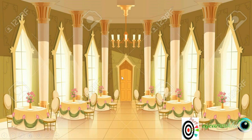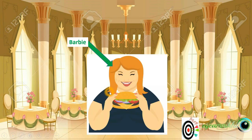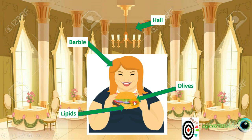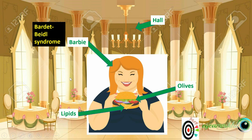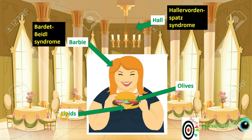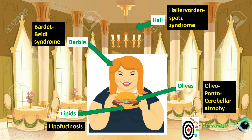For causes in children, visualize her sister Barbie sitting in a hall eating her burger which is full of lipids and olives. Note that patients with Bardet-Biedl syndrome are usually obese, and that's why she likes to eat. So Barbie stands for Bardet-Biedl syndrome, hall for Hallervorden-Spatz syndrome, lipids for neuronal ceroid lipofuscinosis, and olives for olivopontocerebellar atrophy.